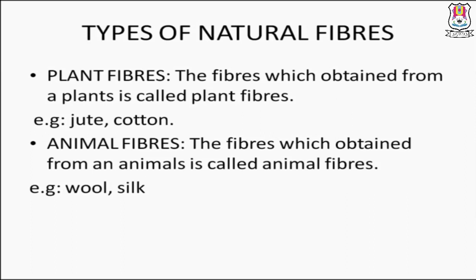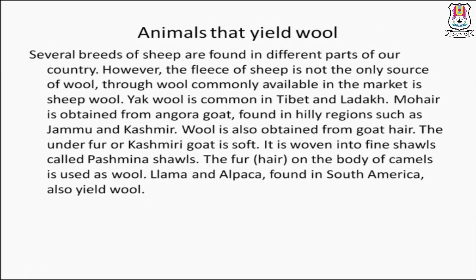Natural fibers also have two types: first is plant fibers and second is animal fibers. Plant fibers are the fibers obtained from a plant. Examples: jute and cotton. Animal fibers are the fibers obtained from an animal. Examples: wool and silk.